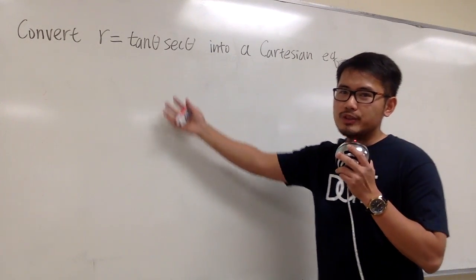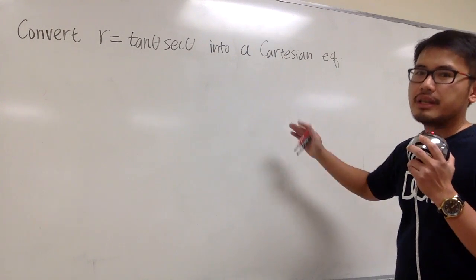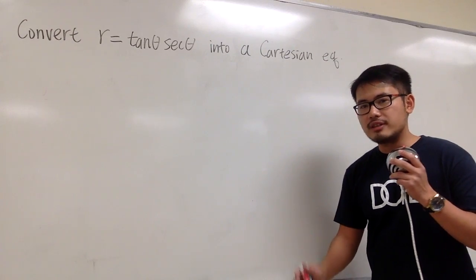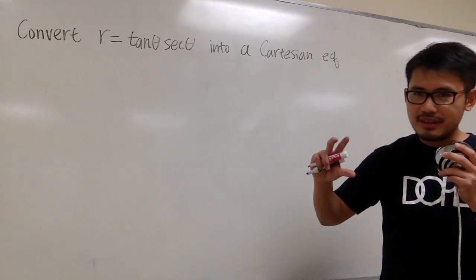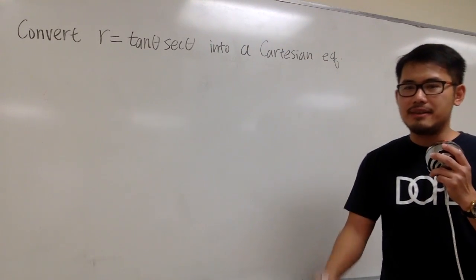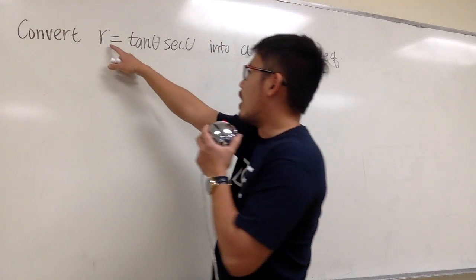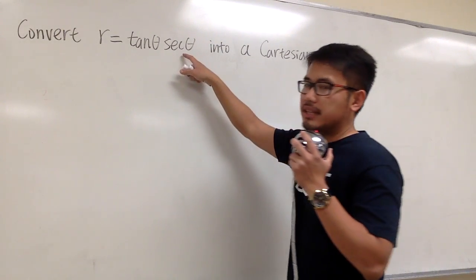Let's convert this polar equation into a Cartesian equation. So this means at the end for our answer, we should have an equation that has just x and y. Here we have r equals tangent theta times secant theta.